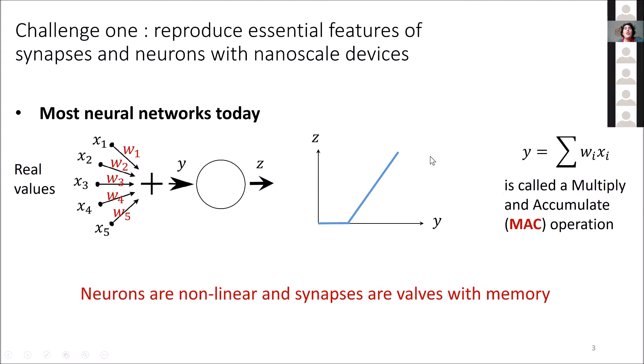This shows what are the essential features we need to reproduce. For the neuron, we need some nonlinearity — we need to be able to emulate this kind of behavior. Here I show one of the most-used neural activation functions today: the rectified linear unit. The second very important thing is to implement this multiply and accumulate operation. The synaptic weights are a kind of analog memory, and it's very important that the devices implementing synapses memorize the synaptic weights that are going to be tuned for learning.